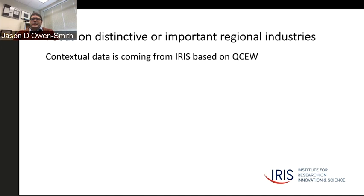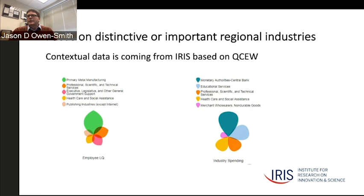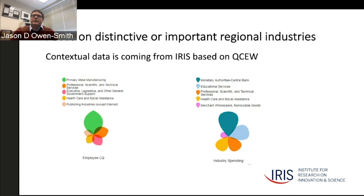We're also able to contextualize this work by asking not just where universities are spending money, but also what the dominant employers are in the regions we're looking at. We've done this down to the county level in some of our reports. This is a way to talk specifically about the anchoring effects of regions in terms not of employment on campus, but of employment around the campus—another essential thing for thinking about our various constituencies.